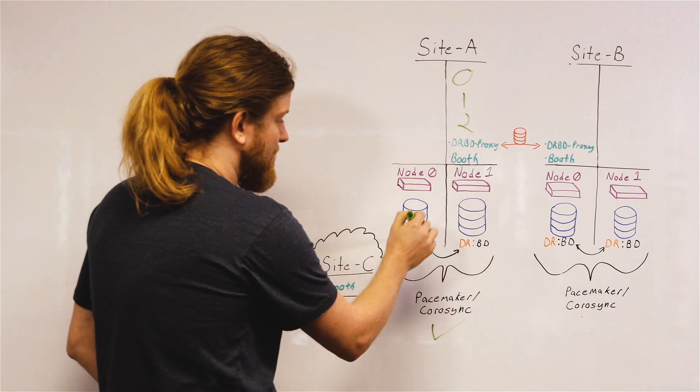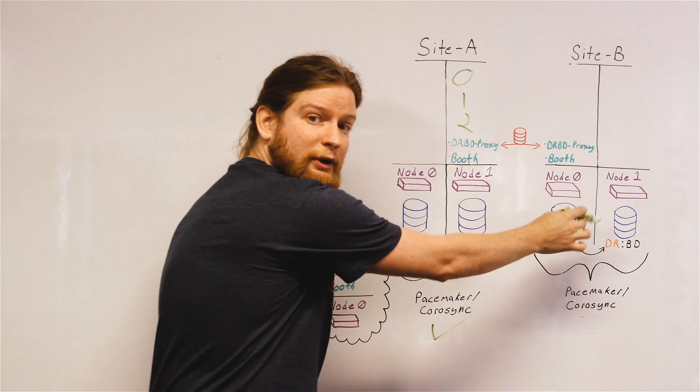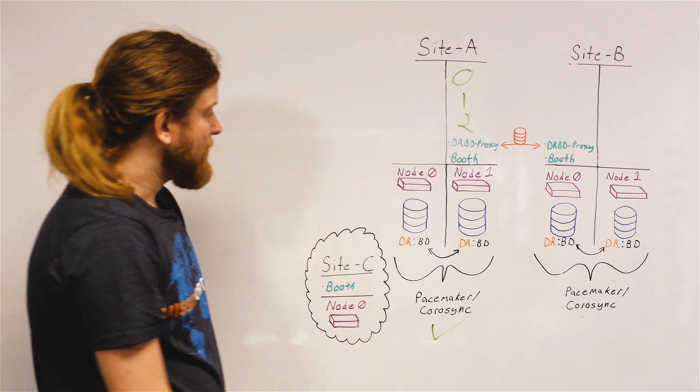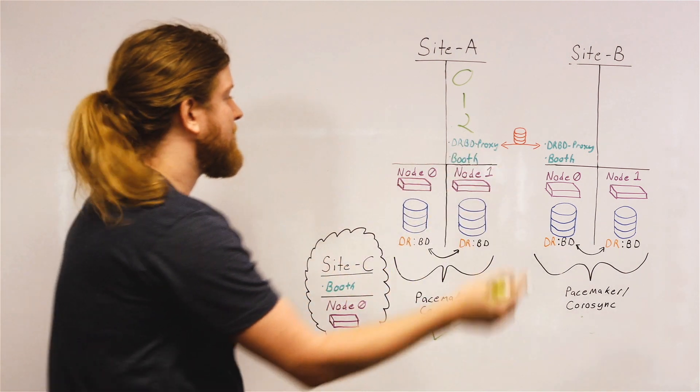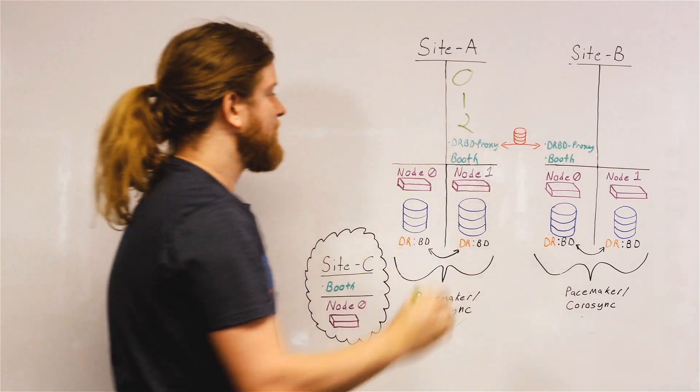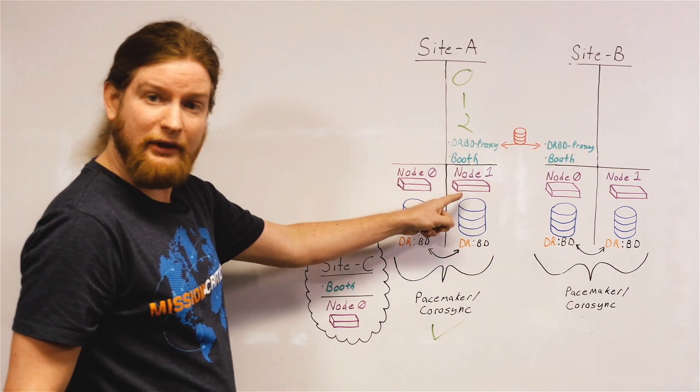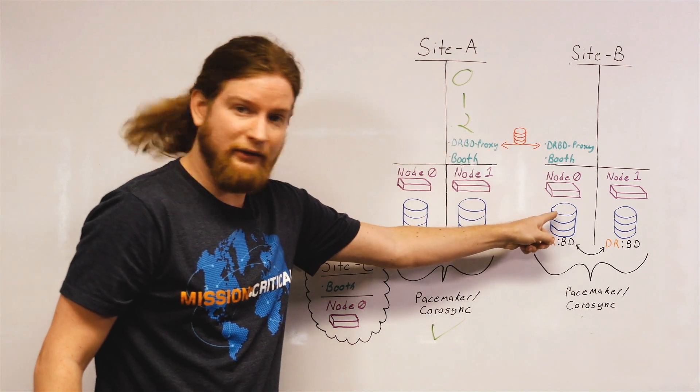So we're using DRBD to replicate data in either one of these local clusters. But in order to replicate the data between those clusters themselves, DRBD proxy is used to replicate one of these disks to one of these disks.